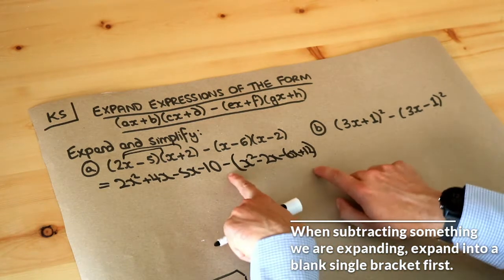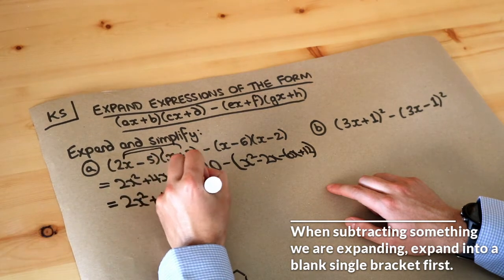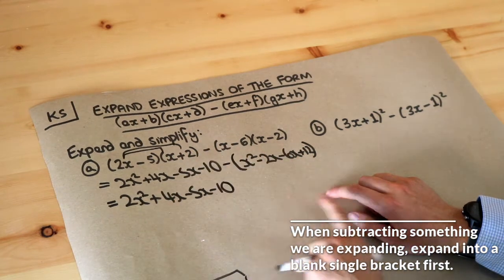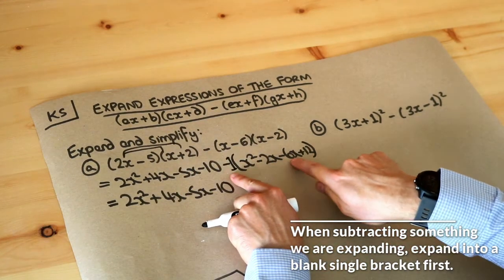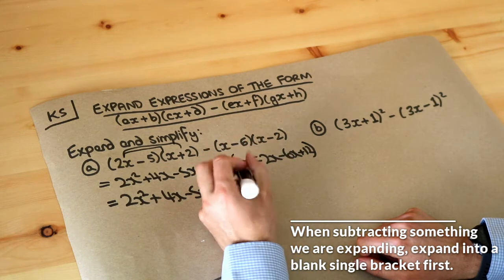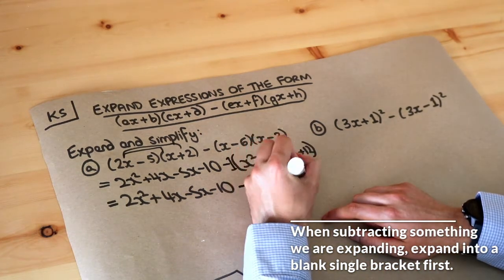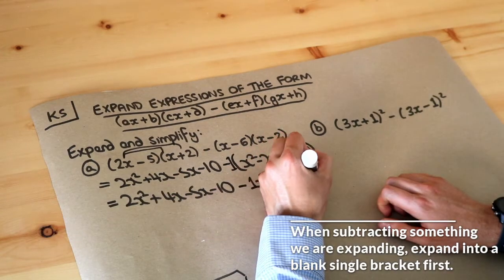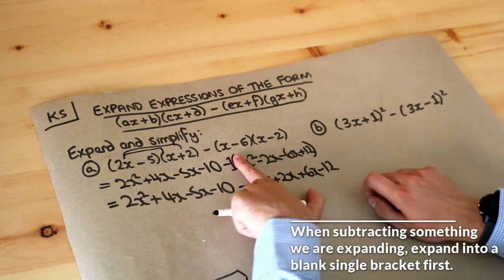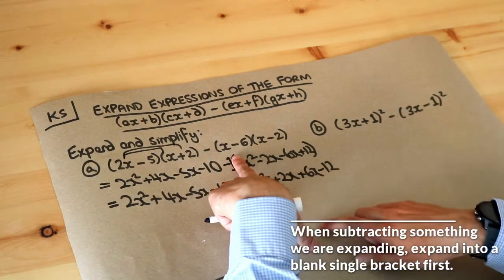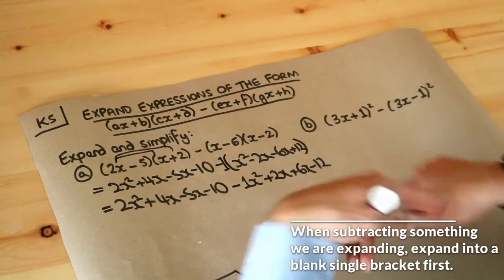Now I'll deal with this single bracket. There's a good reason I put it there — the minus in front can be thought of as a ghostly minus 1. So we do minus 1 times each thing in the bracket: minus 1 times x squared is minus x squared; minus 1 times minus 2x is plus 2x; minus 1 times minus 6x is plus 6x; and minus 1 times 12 is minus 12. The signs change because we're subtracting all of this.